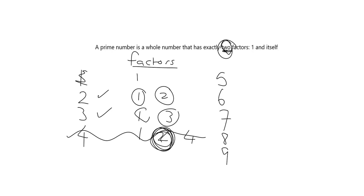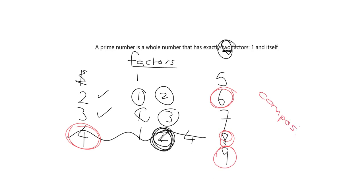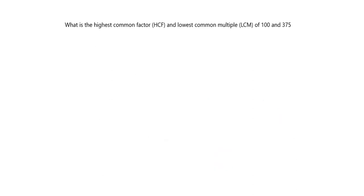Hopefully this is a good reminder to you. Numbers like four, six, eight, and nine that aren't prime numbers — that have more than two factors — are called composite numbers. Now we're going to look at highest common factor and lowest common multiple, using the example 100 and 375.